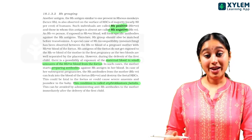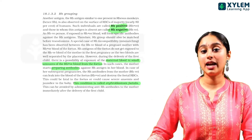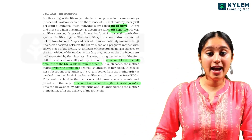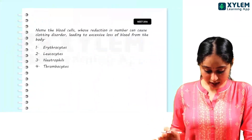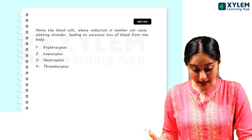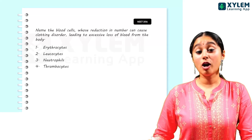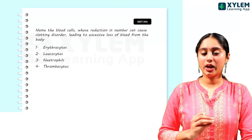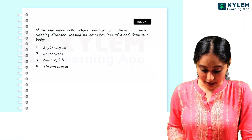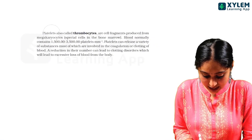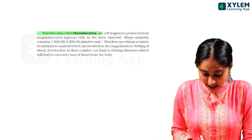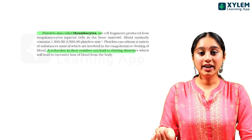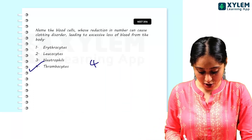This condition — erythroblastosis fetalis — particularly affects the second child, when antibodies are already prepared and attack actually happens. The next question asks whose reduction in number can cause a clotting disorder. We need platelets for the clotting mechanism. Platelets are nothing but thrombocytes, and a reduction in their number leads to clotting disorders. The answer is option 4.